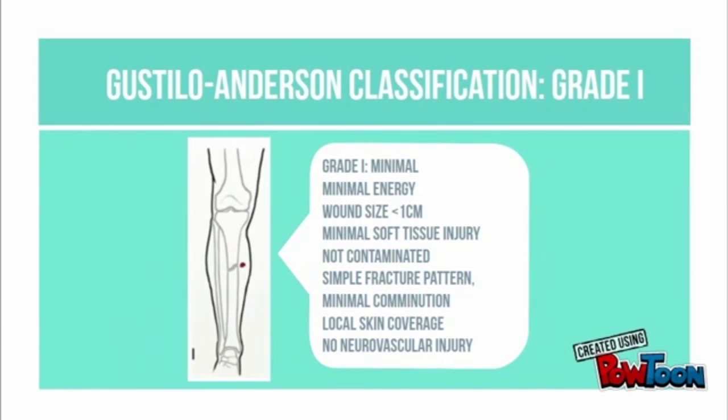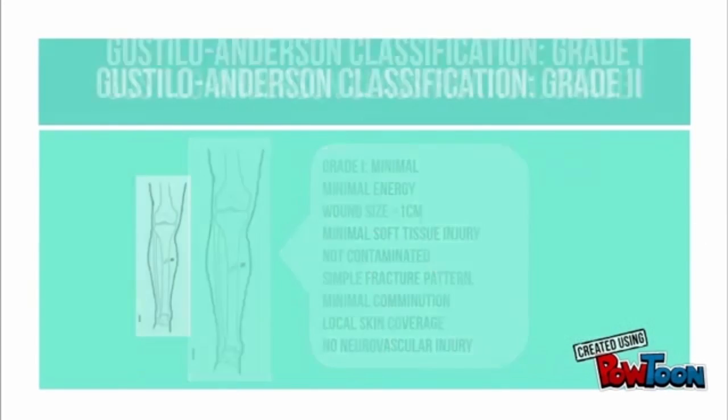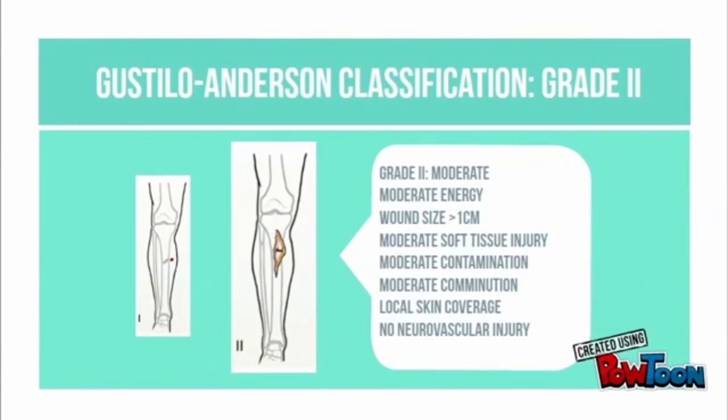Grade 1 is low energy with minimum soft tissue injury, no contamination, and a simple fracture. Grade 2 involves moderate energy, contamination, and comminution.